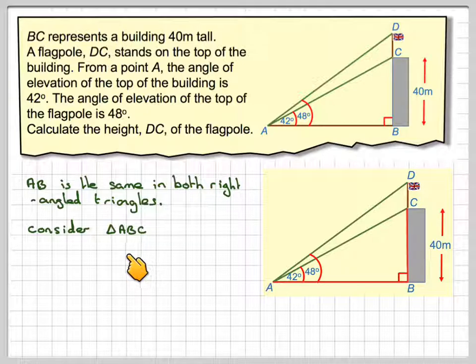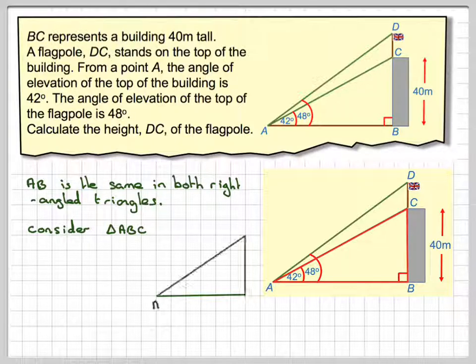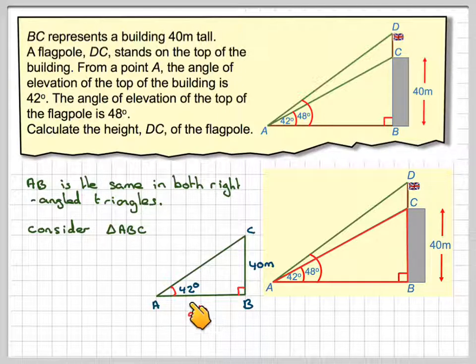Consider triangle ABC. We'll highlight that one in red. Angle 42 degrees. Draw it out and mark on what we know. We know that's 40 and that's 42. This side is adjacent because it's next to the angle. This side is opposite.